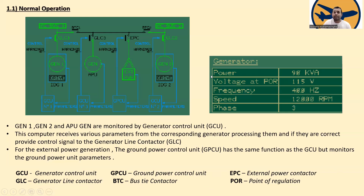The generator power is 90 kilowatts. The voltage at the Point of Regulation is 115 volts, frequency is 400 Hz, speed is 12,000 RPM, and phase number is three.